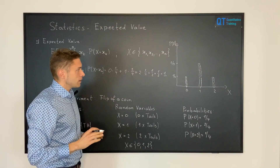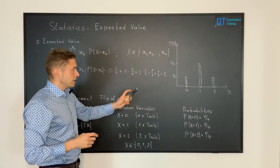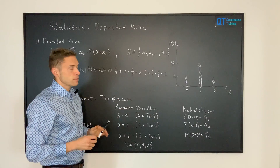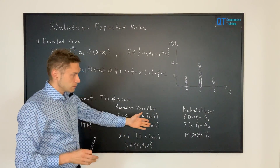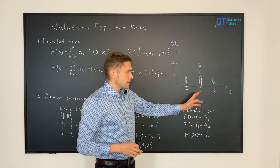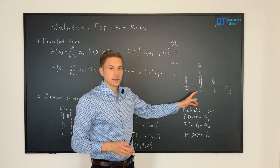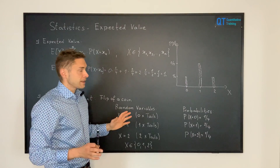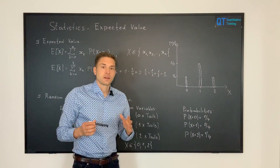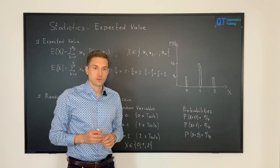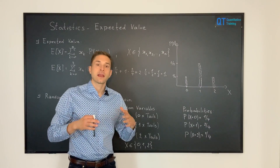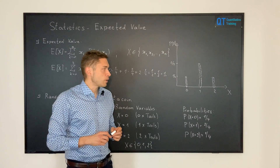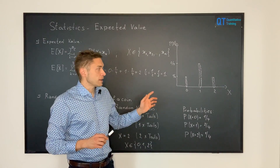We are now ready to analyze our result of the expected value being one. From the histogram and the table, we can see that the probability is highest for the random variable x being one. So what we expect when we flip a coin two times in a row is that, on average, we obtain one time tails.